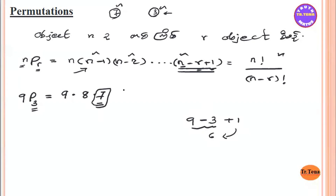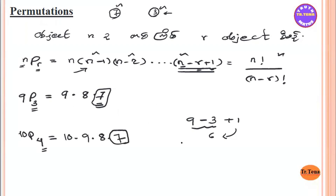The 8th zone is 4, so 9P4 has 4 terms, and 9P5 has 5 terms. How many steps? We have 10P4. So 10P4 has 4 terms: 10, 9, 8, 7. It says the last term is 7, which is 4 terms.